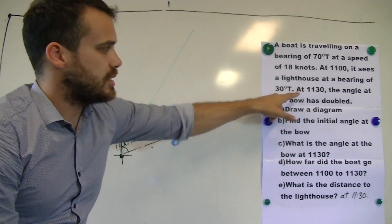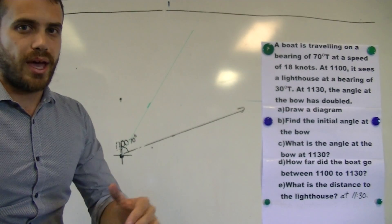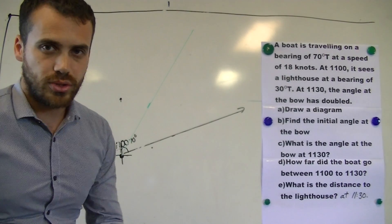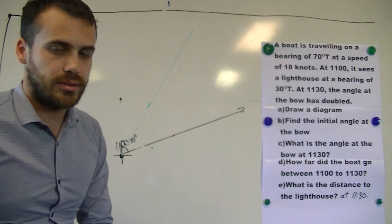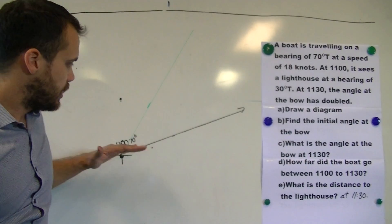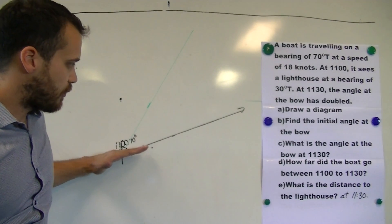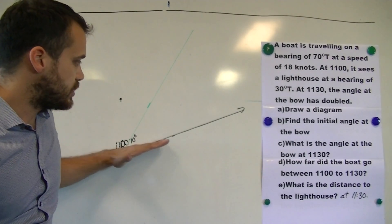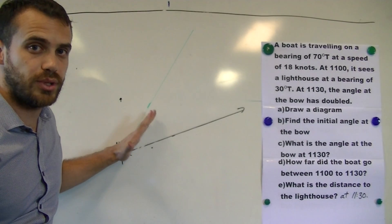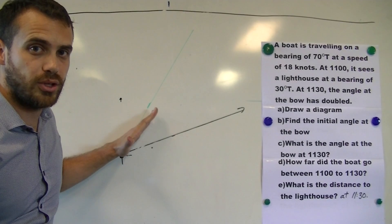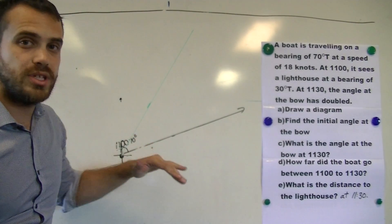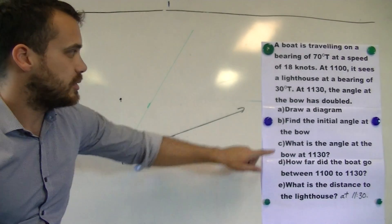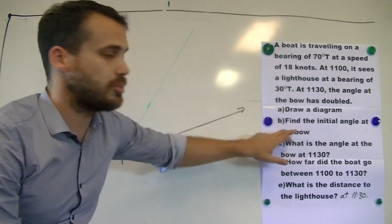At 11:30, the angle at the bow has doubled. Let's talk about what an angle at the bow means. An angle at the bow is the angle from the head of the boat, so the front of the boat, which is the bow, to whatever you're looking at. So we were looking at a lighthouse. Now what's the initial angle at the bow? Find the initial angle at the bow.